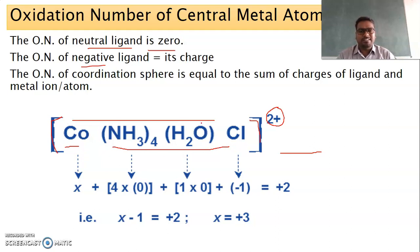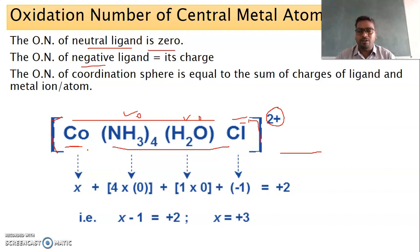Let us look at this complex. Cobalt is the central metal ion. It has three types of ligands: ammonia, water, and chloride. Ammonia is a neutral ligand with charge zero, water is a neutral ligand with charge zero, and chloride is a negative ligand with charge −1.